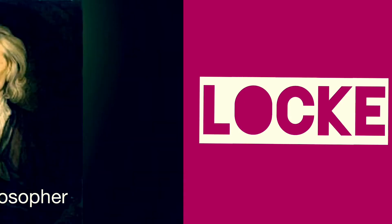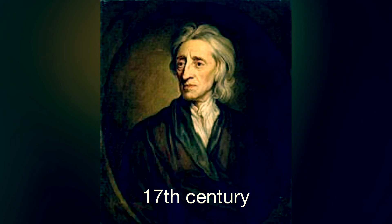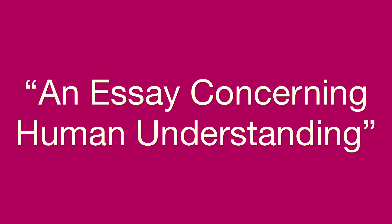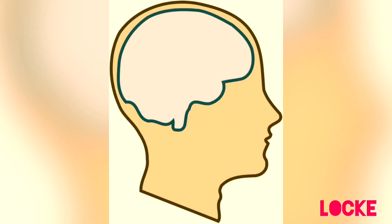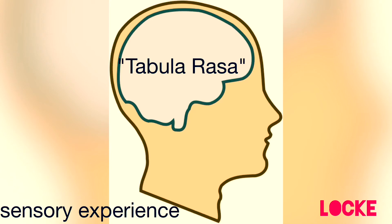John Locke. Locke was among the most famous philosophers and political theorists of the 17th century. His views on education are based on his empirical theory of human knowledge in his famous work, An Essay Concerning Human Understanding. His idea was that when born, the mind of the child is like a blank slate — tabula rasa — to be filled later with the data derived from sensory experience.